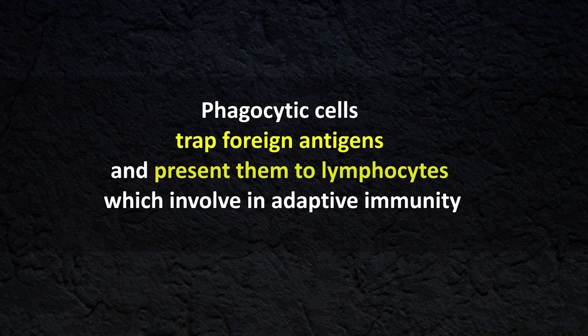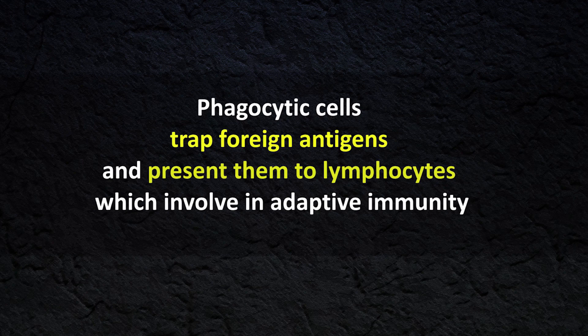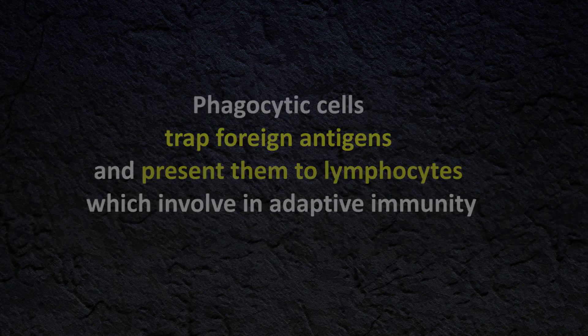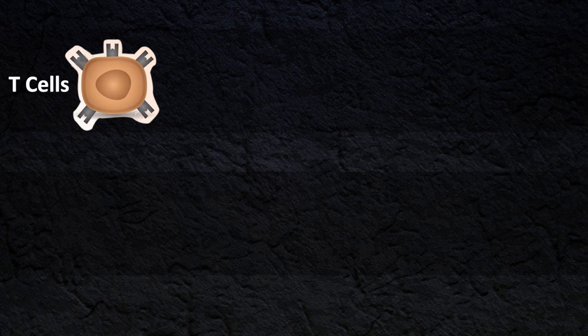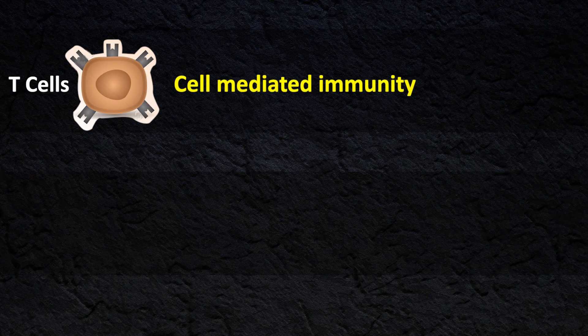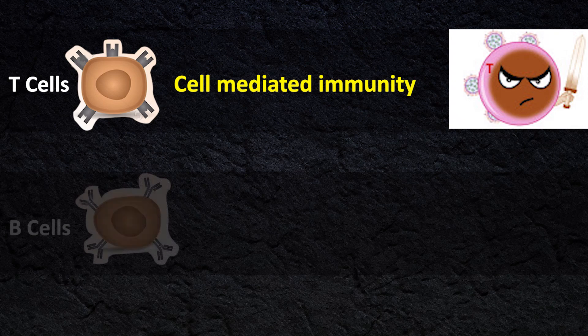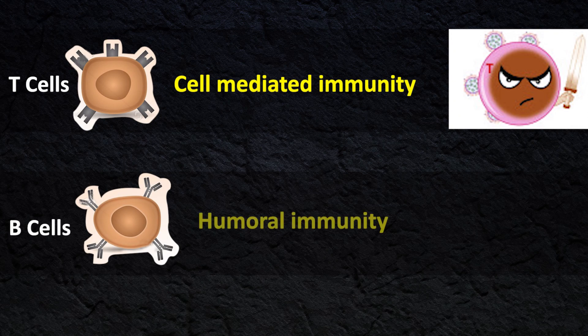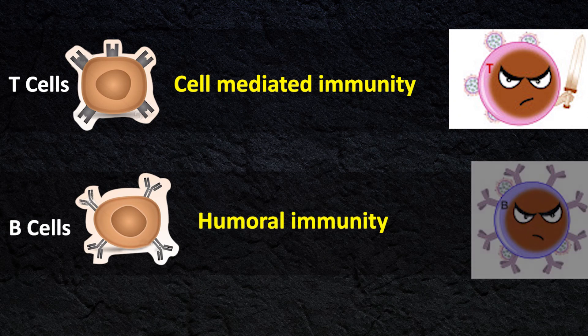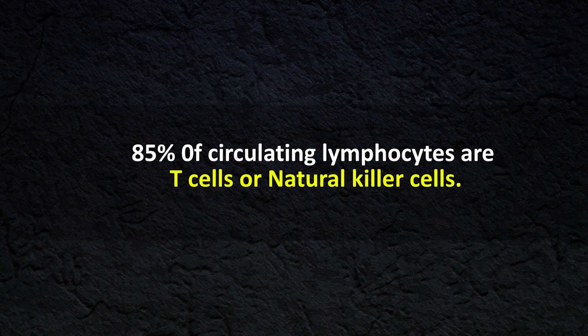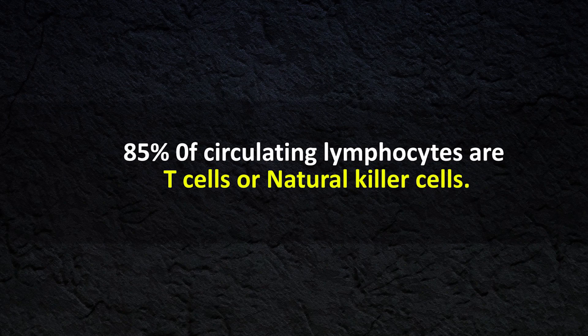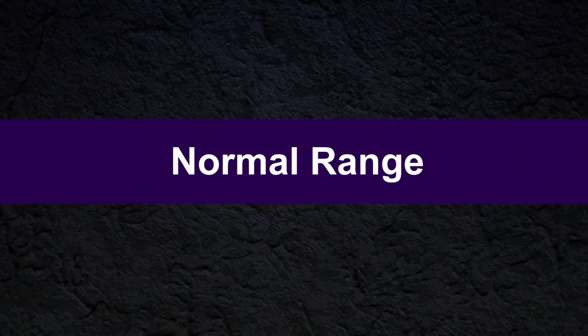Phagocytic cells trap foreign antigens and present them to lymphocyte cells, which are involved in adaptive immunity. T cells are involved with cell-mediated immunity and release substances which kill affected cells. B cells are involved with humoral immunity and produce antibodies to attack antigens. 85 percent of circulating lymphocytes are T cells or natural killer cells.